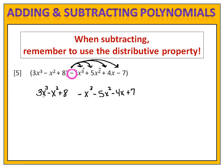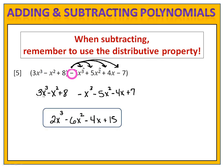You do have to be very careful there. Whenever you have subtraction, you want to be sure to use the distributive property. Now we can combine like terms. When we combine like terms, we end up with 2x to the third minus 6x squared minus 4x plus 15.